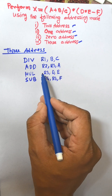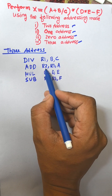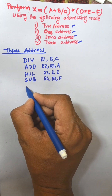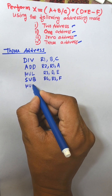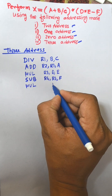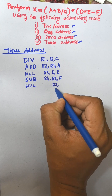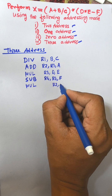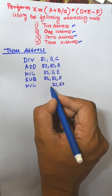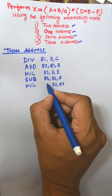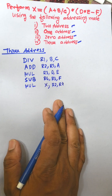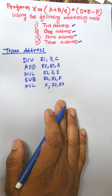Now the final result: the result of the addition and subtraction are multiplied together. The addition result R2 and subtraction result R4 are multiplied and the result is transferred to X. This is known as three-address instruction format.